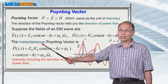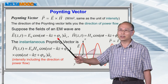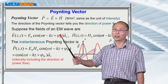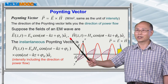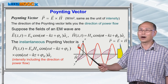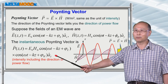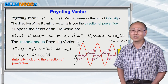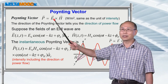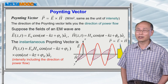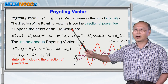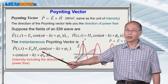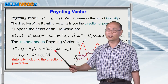Applying the Poynting vector to these two fields gives the instantaneous Poynting vector by multiplying E and H together. Because this is a vector cross product of x-hat and y-hat, the result is along z-hat, confirming that power propagates along the z-direction. The Poynting vector thus tells you both the intensity of radiation and the direction of power flow, and it is a function of both position and time.